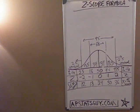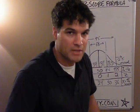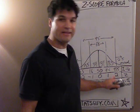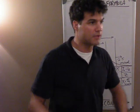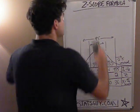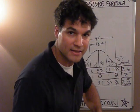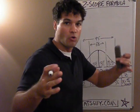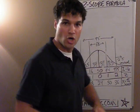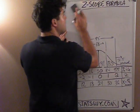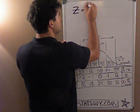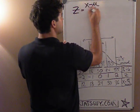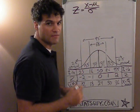This one's on the z-score formula. You use the z-score formula when you have a data value and you want to get a z-score, or if you have a z-score and you want to get a data value. Those are the two times you use it. The z-score formula says that the z-score for any given data value x is just the distance it is away from the mean, divided by the standard deviation of the data set.